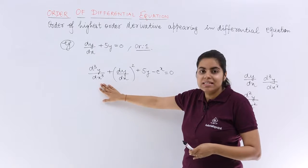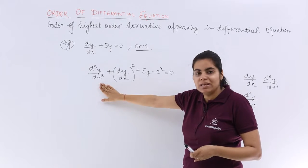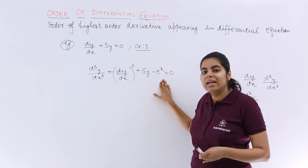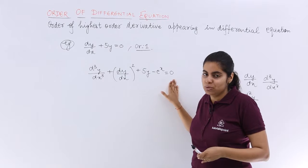What about the second example? The second example is d³y/dx³ + (dy/dx)² + 5y - e^x = 0.